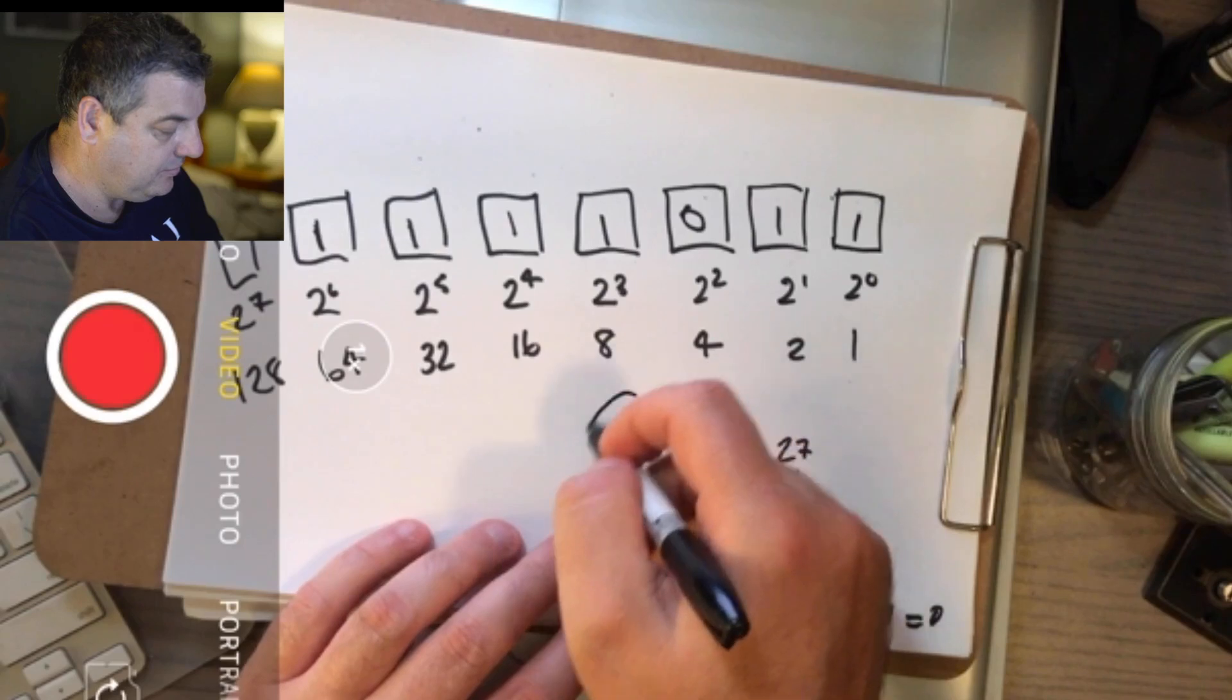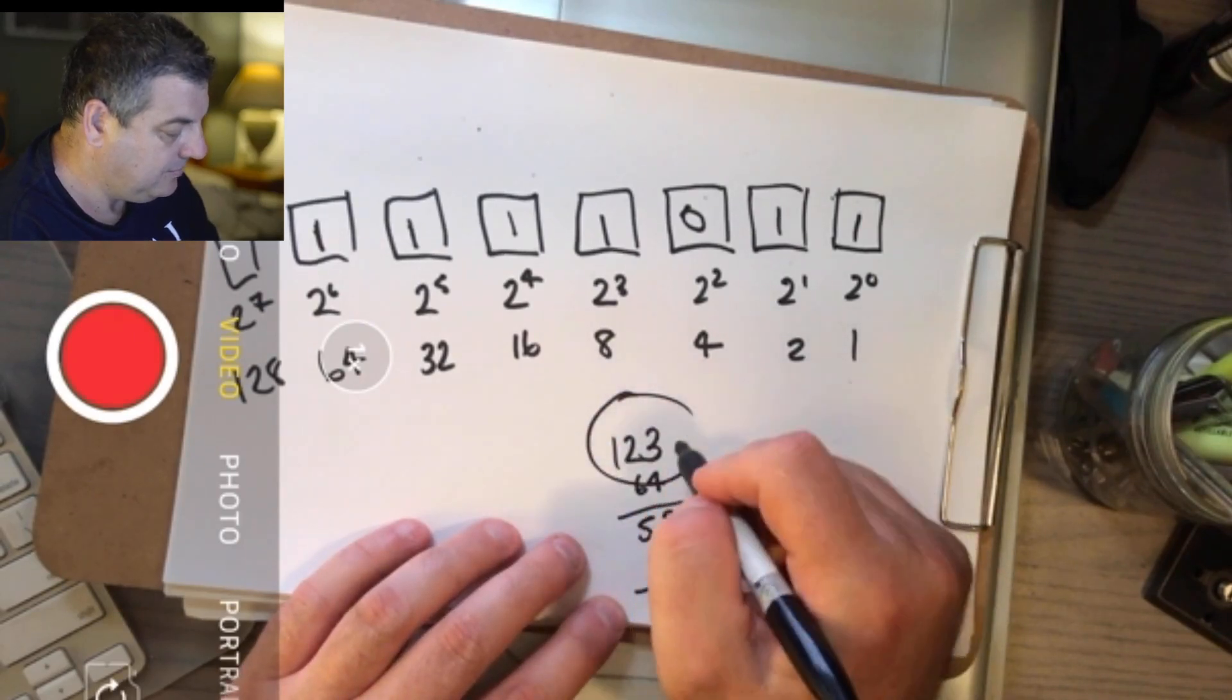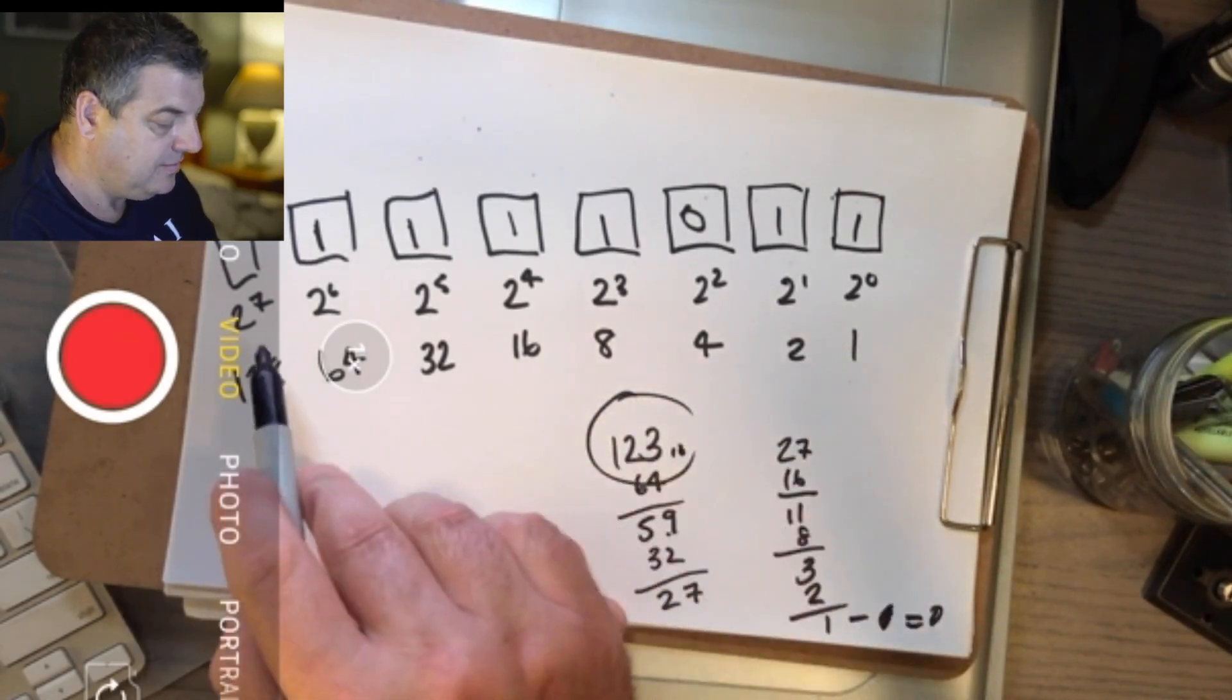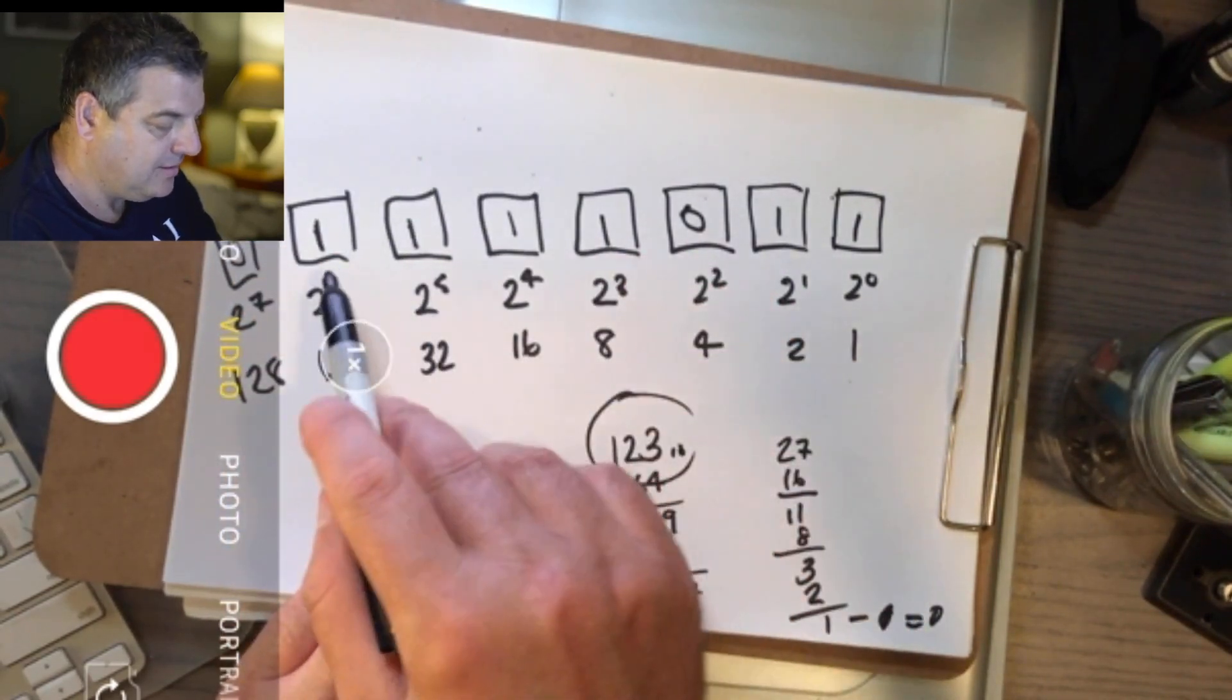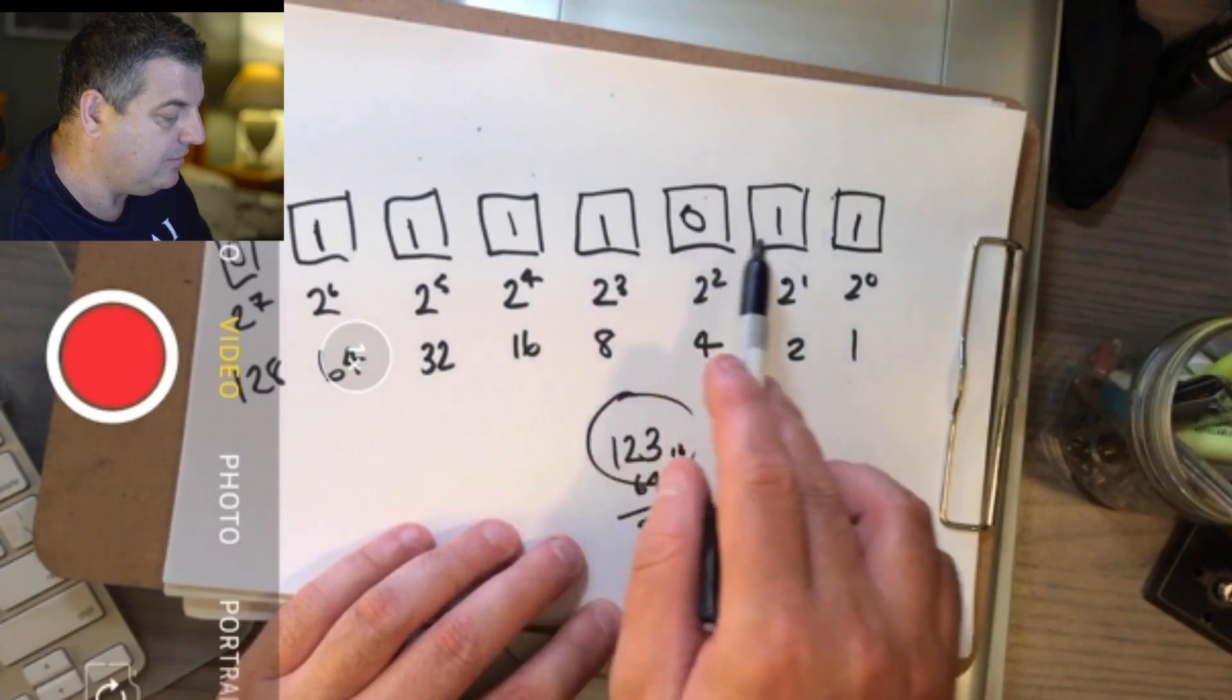So 123 decimal, or 123 base 10, equals 1111011. And we can probably go online and see if we've got a converter there, just to prove that I did it right.